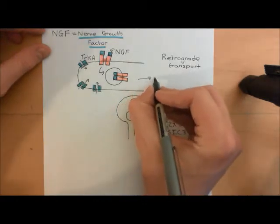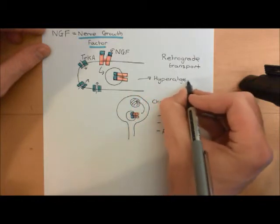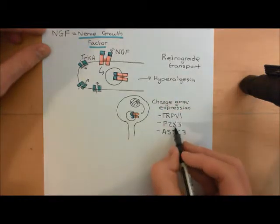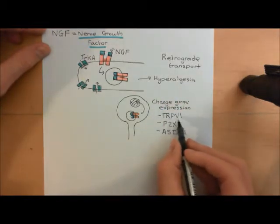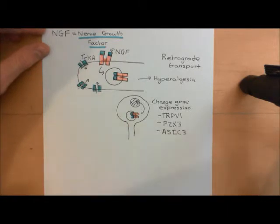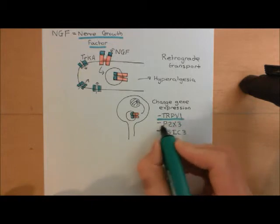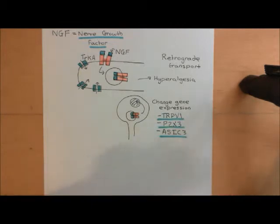This underlies hyperalgesia, one of the other components of sensitisation. By upregulating these ion channel subunits — which tetramerise together in the case of TRPV1 and trimerise together in the case of P2X3 and ASIC3 — the overall result is that you increase the density of these ion channels, and therefore you increase the response you get for a certain amount of the noxious stimulus, producing hyperalgesia. All three are upregulated in response to the TrkA receptor.